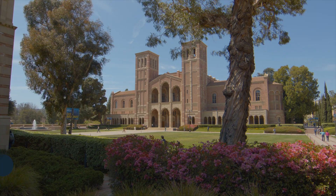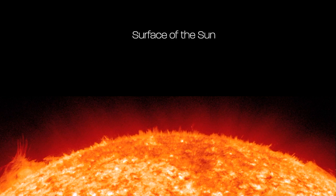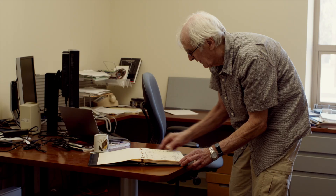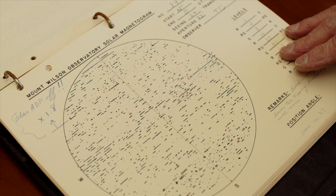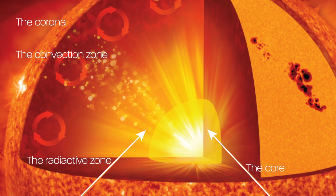Helioseismology is the study of the motions of the gas and how the waves that propagate through the Sun can tell us about the properties of the materials they're passing through. Initially, it was a matter of looking at the frequencies of the Sun oscillating and trying to compare those frequencies with what models predict, and trying to adjust the models so that they predicted the right frequencies. In addition, the gas in the Sun drags the waves with it.